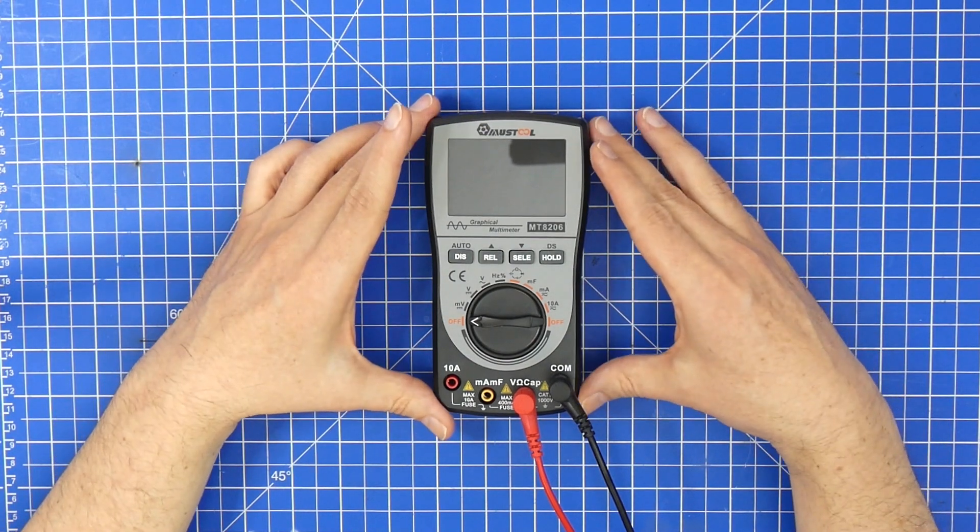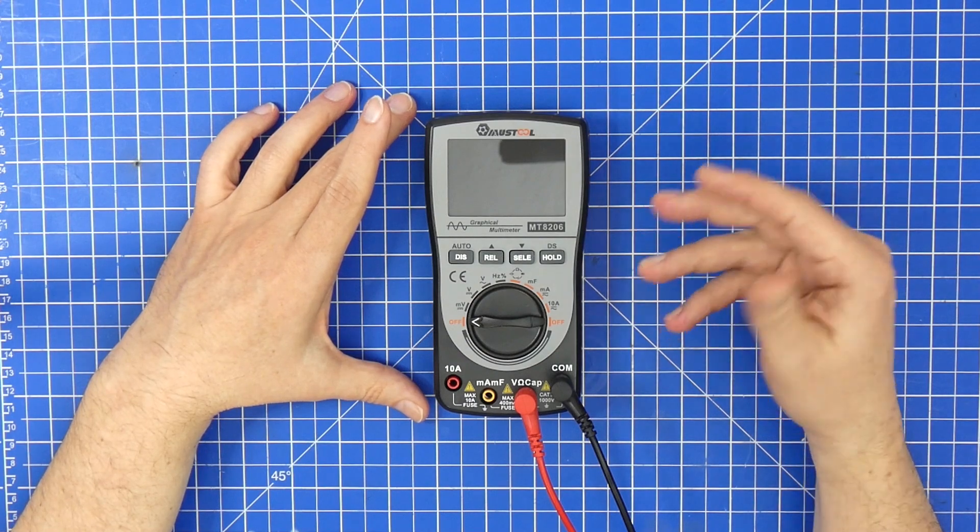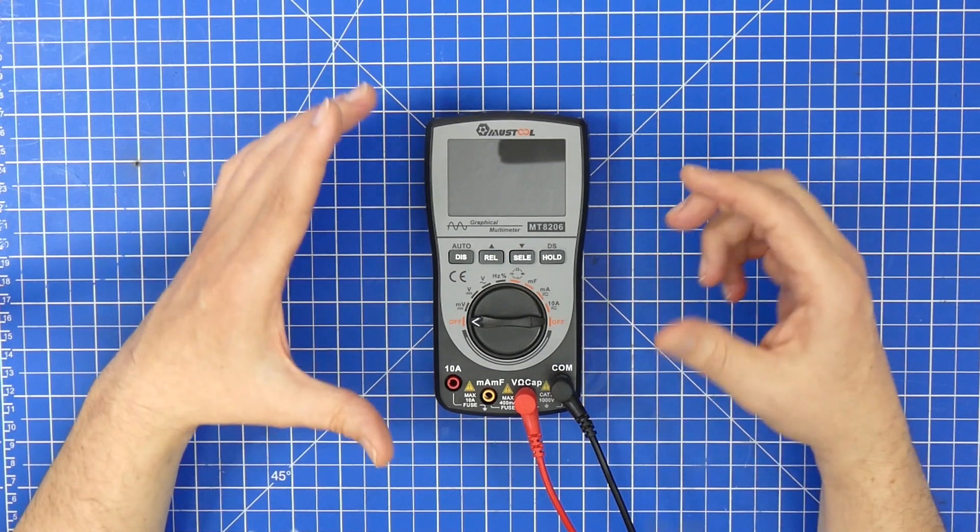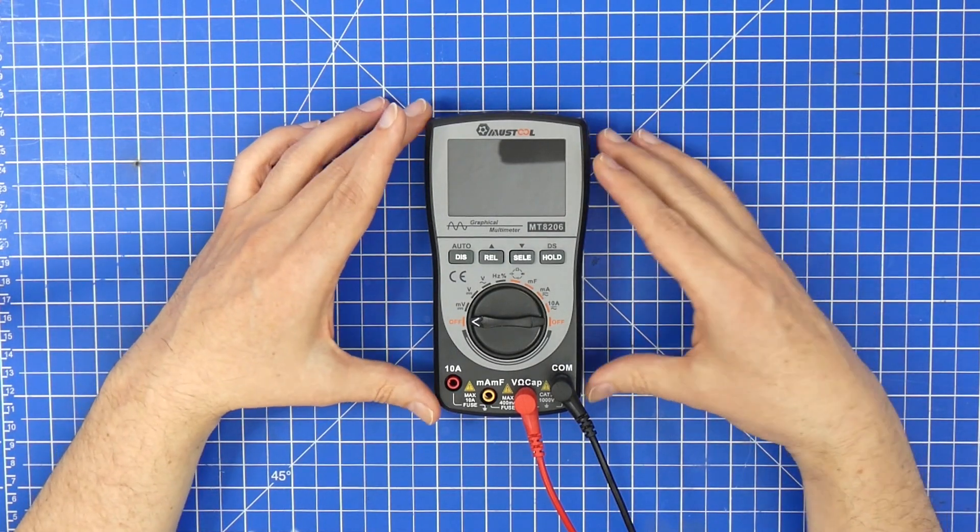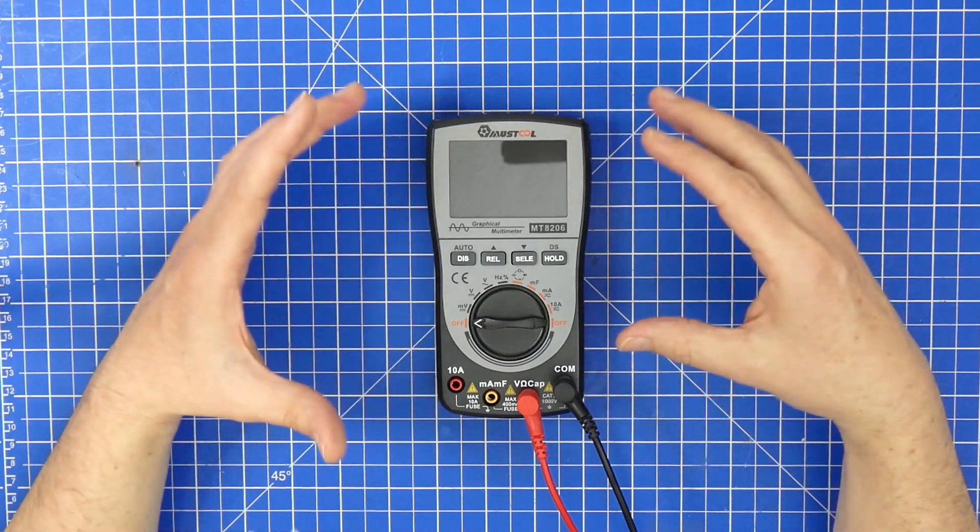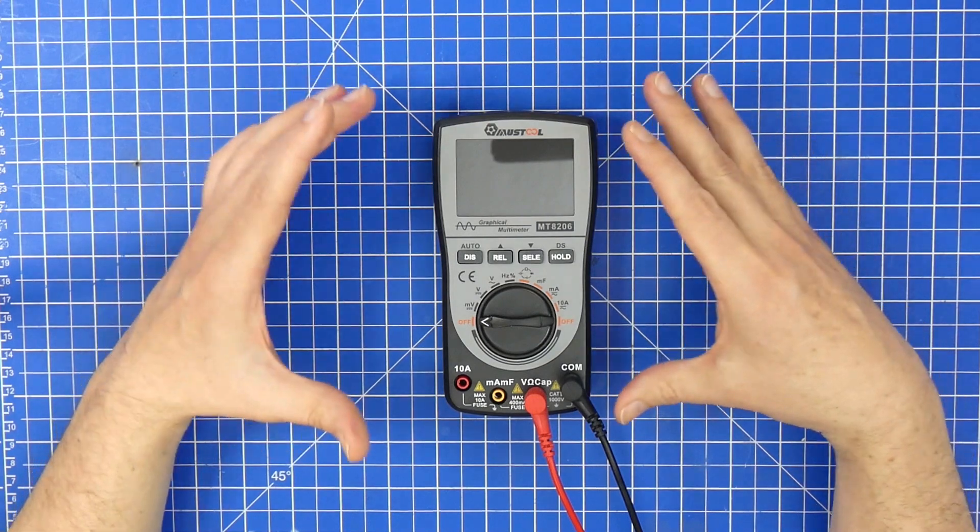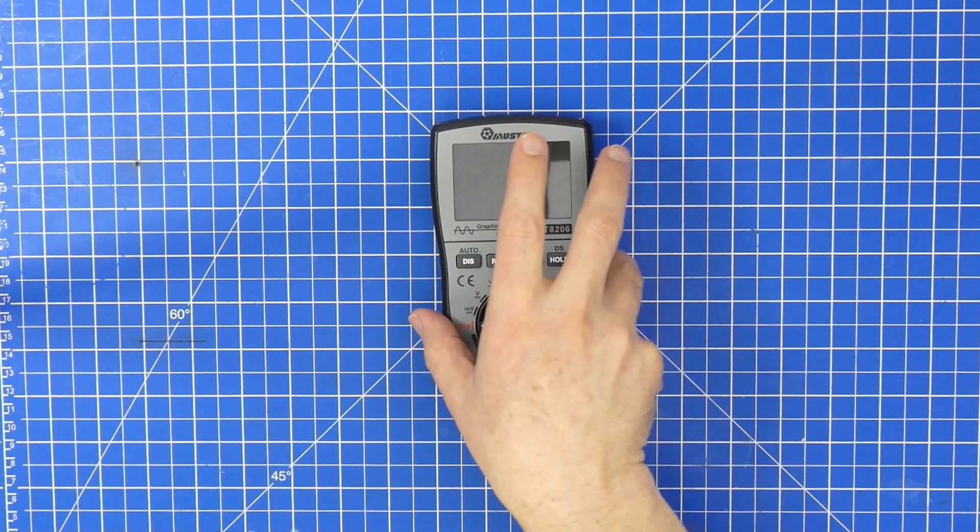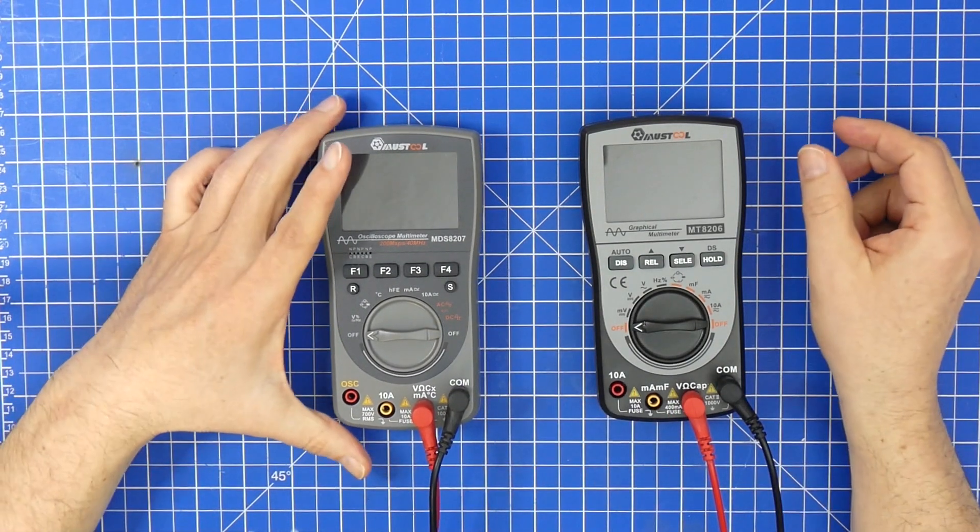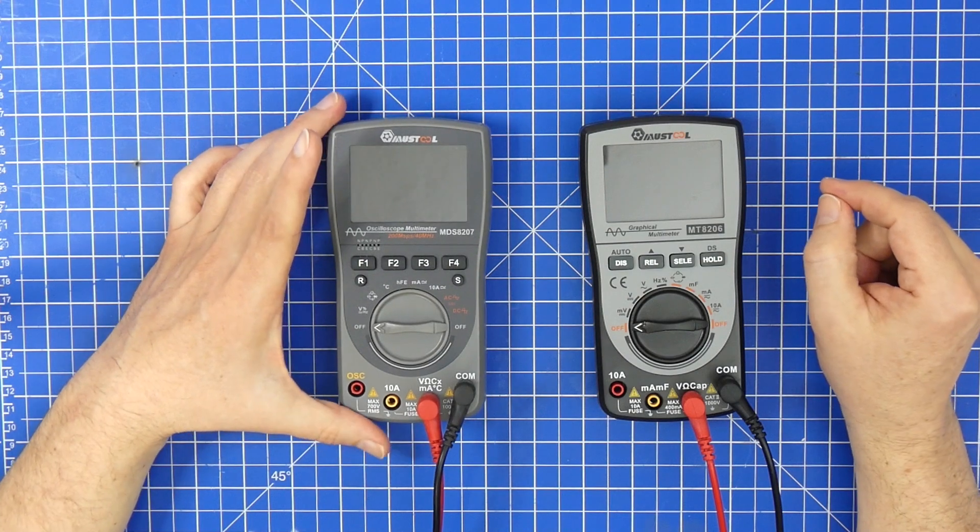I really like it because of all the features that it has and I went through all its measuring and it was pretty much spot-on. Now that was half a year ago. Now Mustool came out with the MDS 8207 and this thing is such an improvement over that thing.